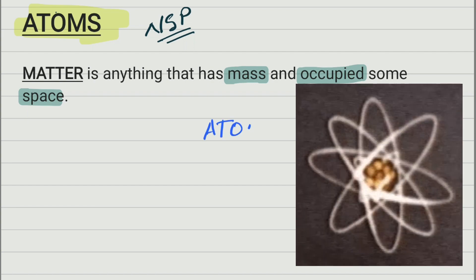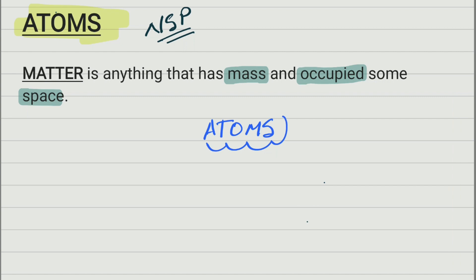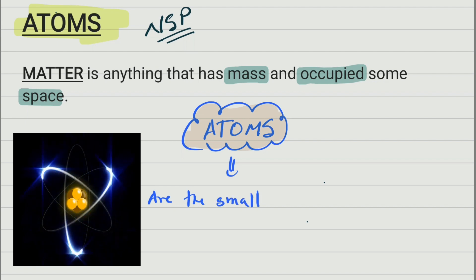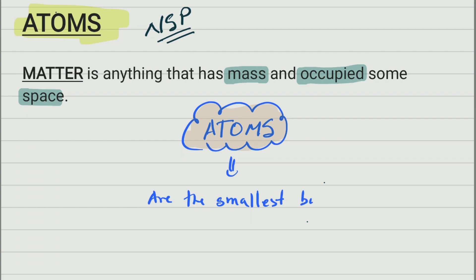Atoms. Now what is an atom? It's a very small particle. Everything is made of atoms. We say that atoms are the smallest building block of matter. It's the smallest building block of matter. So everything around us is made of atoms, and everything therefore is matter.